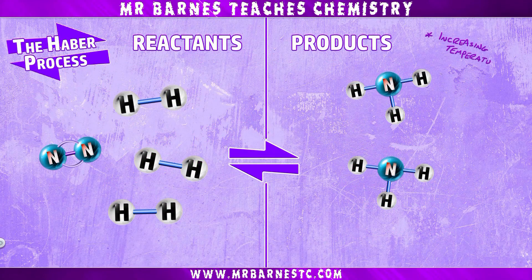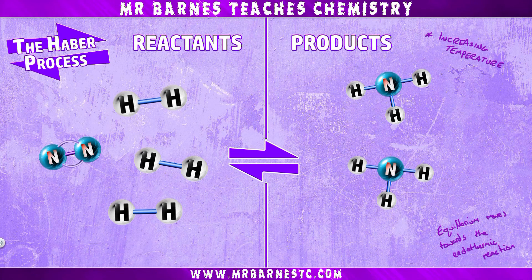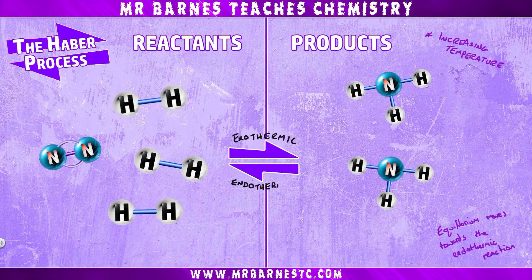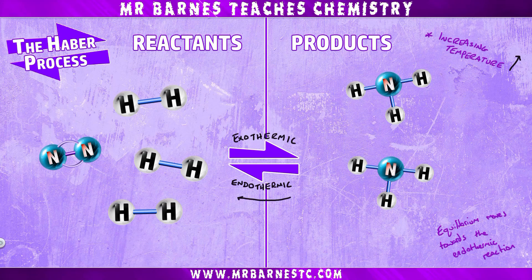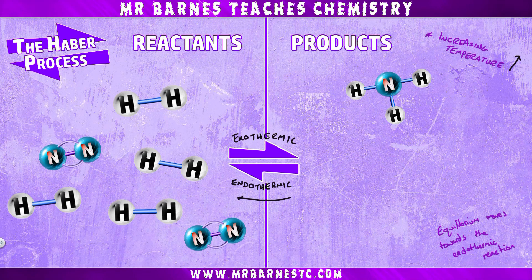Starting with temperature: if you increase the temperature, equilibrium moves towards the endothermic reaction. In the Haber process, the forward reaction is exothermic — it gives out heat — and the backwards reaction is endothermic, meaning it takes in heat. So increasing the temperature favours the endothermic backwards reaction, giving more reactants — more nitrogen and hydrogen — and therefore less product, less ammonia. So we have less yield at higher temperatures.